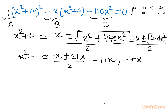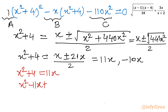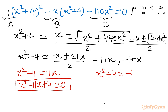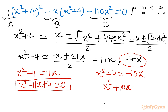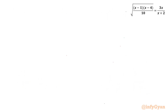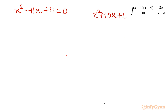From these two cases we form two quadratic equations. First: x squared plus 4 equals 11x, giving x squared minus 11x plus 4 equals 0. Second: x squared plus 4 equals minus 10x, giving x squared plus 10x plus 4 equals 0. Solving these two equations will give us four solutions total.